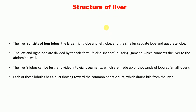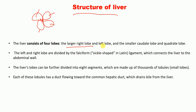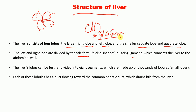Regarding the structure of the liver: the liver consists of four lobes. The larger ones are the right and left lobes, and the smaller lobes are the caudate lobe and quadrate lobe. The left and right lobes are divided by the falciform ligament — a sickle-shaped ligament in Latin — which connects the liver to the abdominal wall.